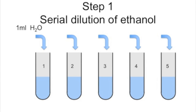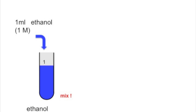The first thing you will do is set up a serial dilution of ethanol. You'll do this by first pipetting one ml of water into five tubes. Then, to the first of these tubes, you'll add one ml of ethanol at one molar, which is provided to you.